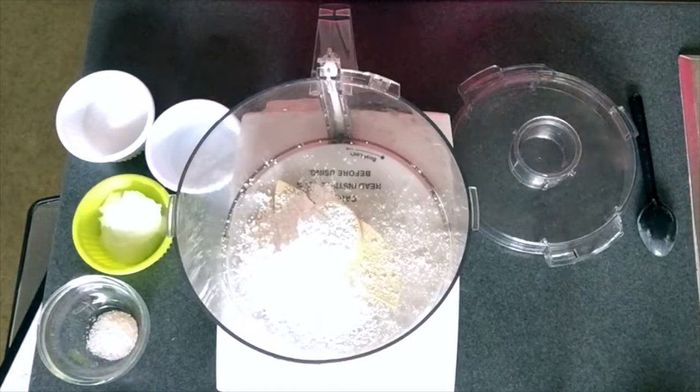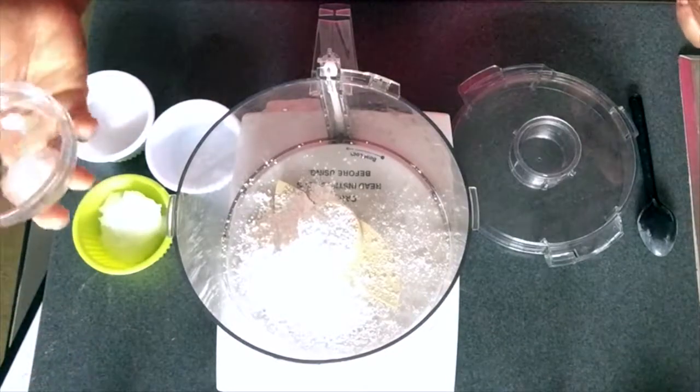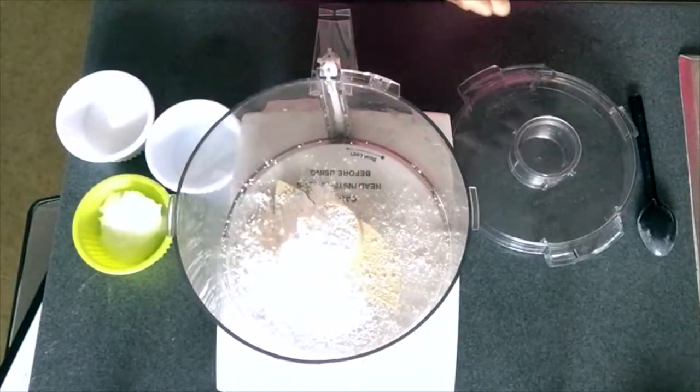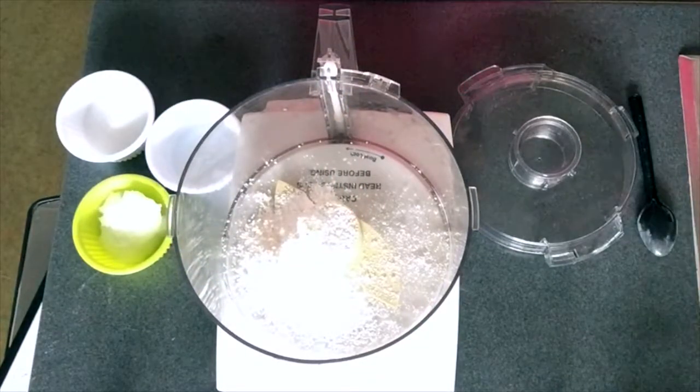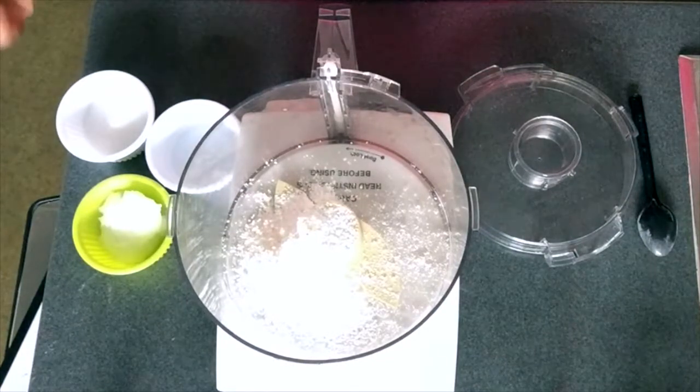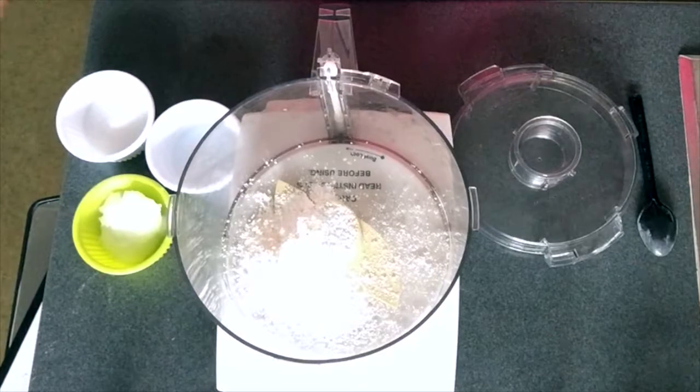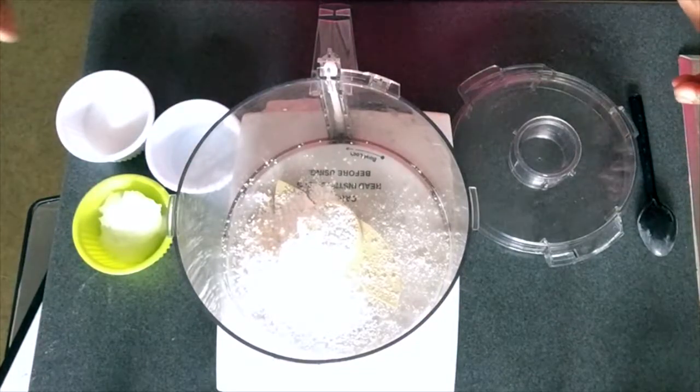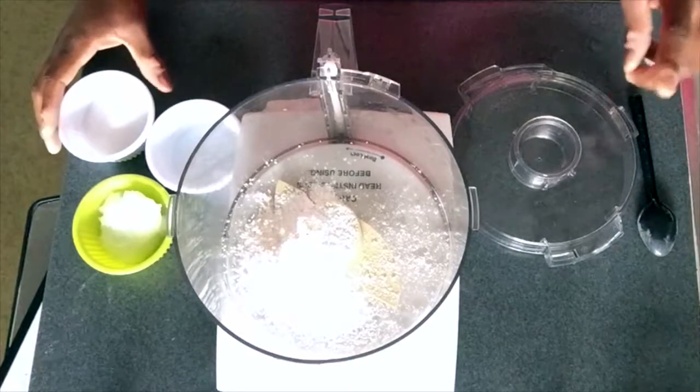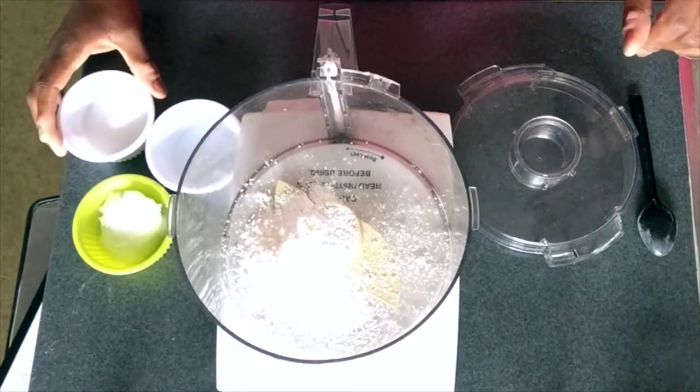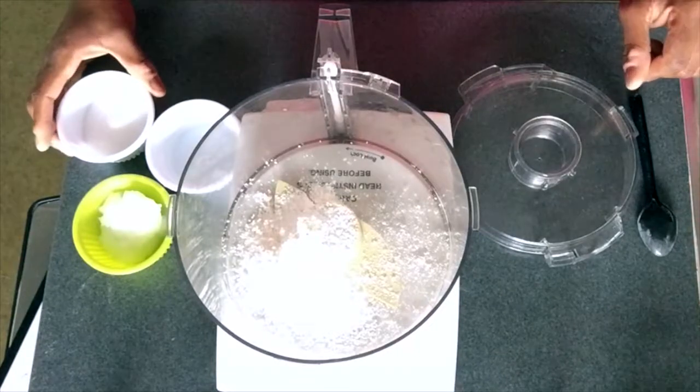Next up I'm putting in pink Himalayan salt. The Himalayan salt helps to neutralize the bacteria from sugary foods. It freshens your breath, helps with bleeding gums, and it acts as a tooth whitener. That was a half teaspoon of pink Himalayan salt.